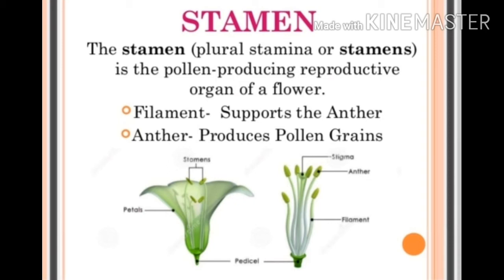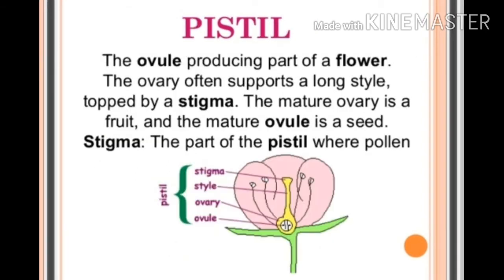Anther and filament are the parts of the stamen. Stamen is the male reproductive part of a flower, while pistil is the female reproductive part. Stamen produces pollen grains which contain the male gamete. Pistil produces ovules which contain the female gamete. The ovule-producing part of the flower is known as the pistil.